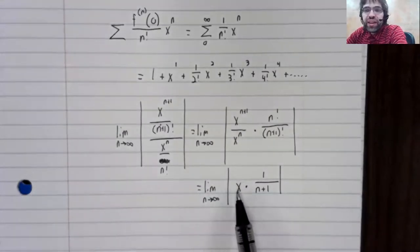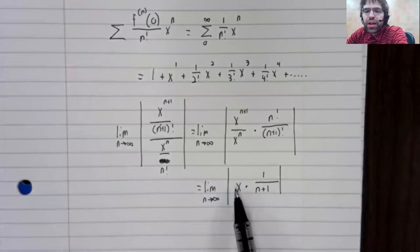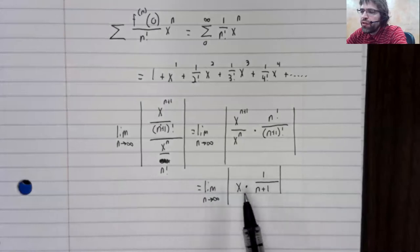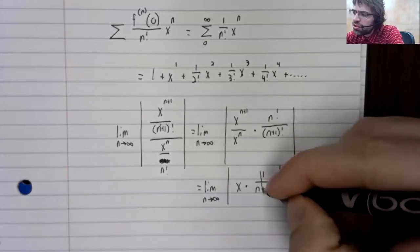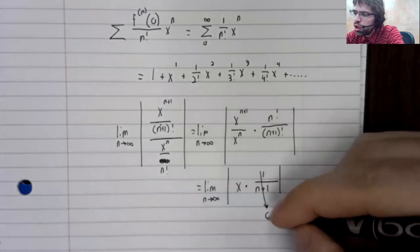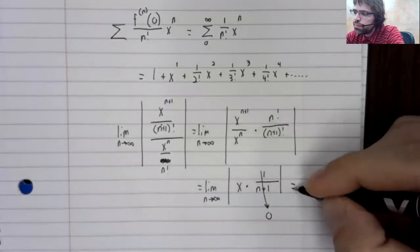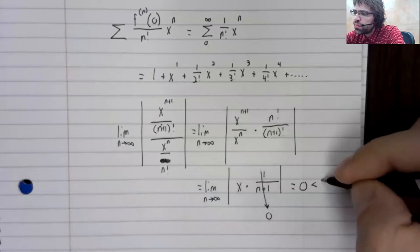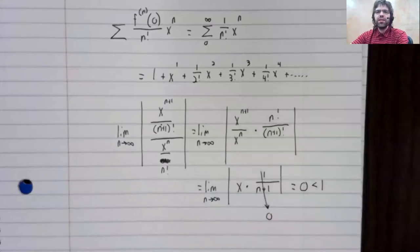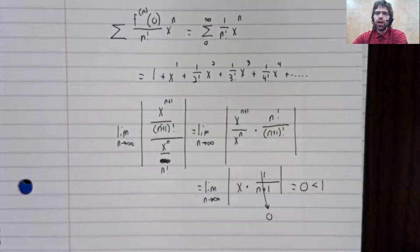And for any fixed x, even if x is a large number, you have a fixed constant times something that's going to zero. This limit is always less than one.